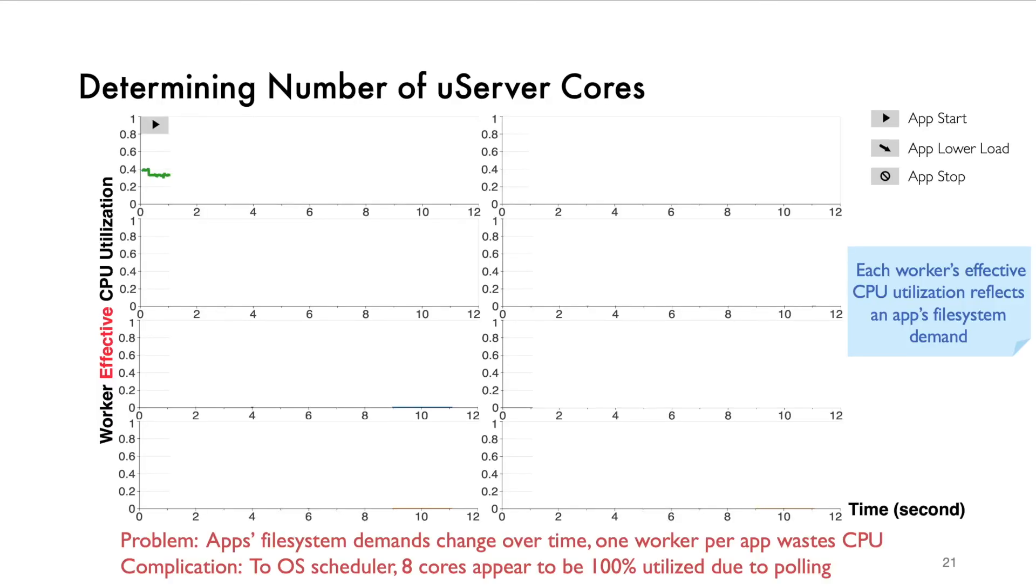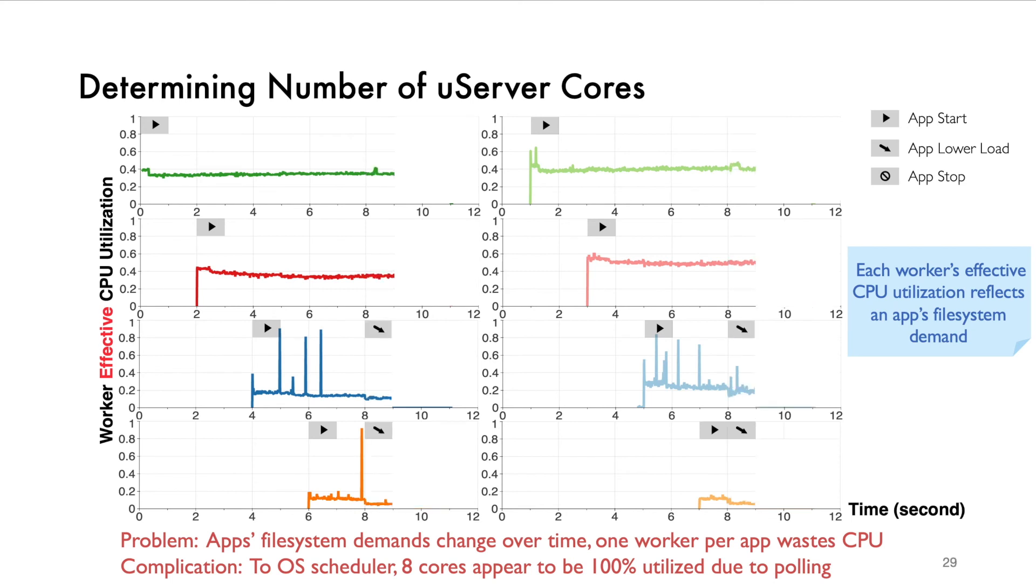Let's look at an example on the changing workload. What happens when users will dedicate one worker for each application, which will offer the maximum performance? In this case, we have eight applications of different workloads starting to issue file system requests one after another with a one-second delay. And then four applications lower the load and stop accessing the file system. Next, the rest of the applications lower the load and finally stop issuing file system requests. The effective CPU utilization of each USERVER core changes and is often much lower than 100%. Instead of using eight USERVER cores, UFS will dynamically determine the appropriate number of cores. And we use allocating one worker per application as the maximum performance to compare in our load balancing and core allocation experiments.